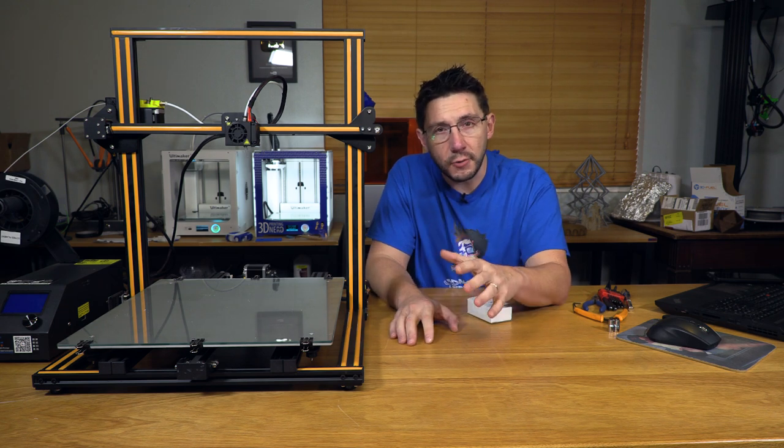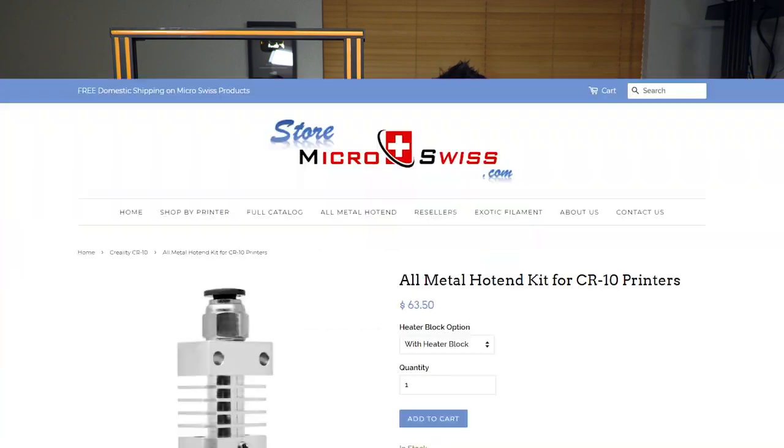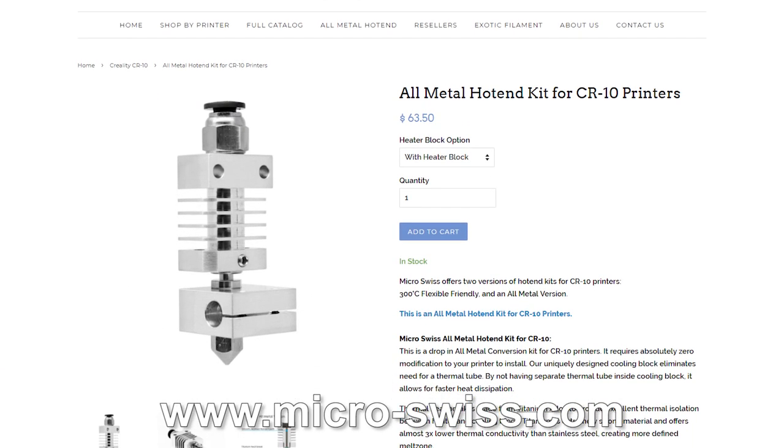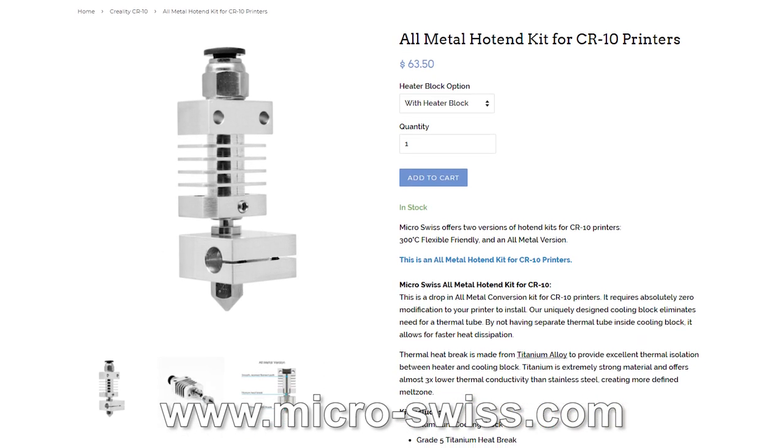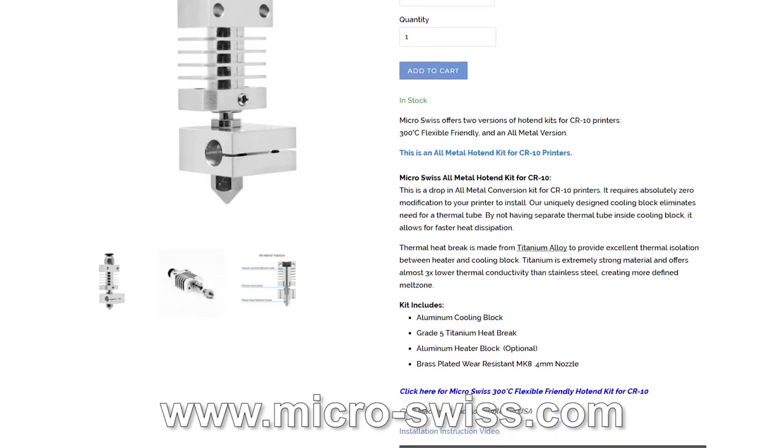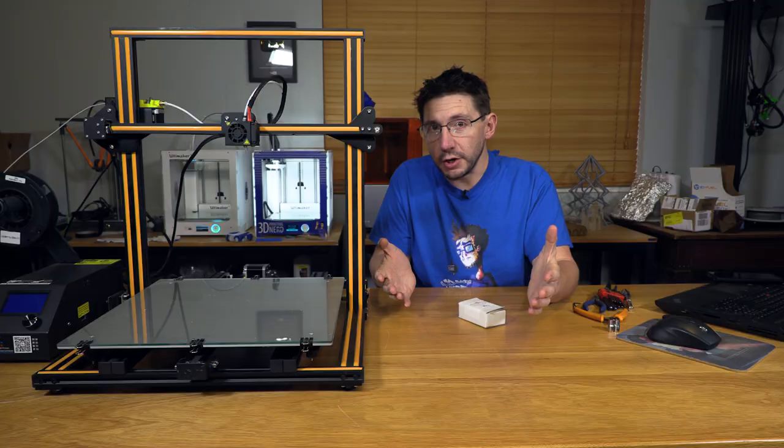I'm going to show you one of the ways that you can upgrade it with a Micro-Swiss all-metal hotend. This will not only let you print with materials that require higher temperatures, it'll also provide you with a nozzle to help alleviate the stress of printing with abrasive filaments. I'm Joel, and this is 3D Printing Nerd.